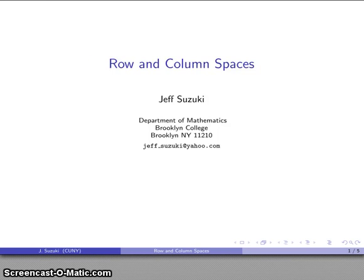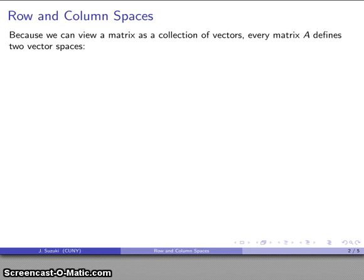So let's talk about row and column spaces, and this emerges as follows. Because I can view a matrix as a collection of vectors, then every matrix defines two vector spaces.